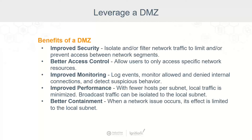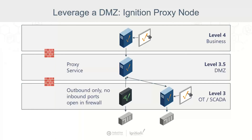Let me show you a couple of examples relevant to Ignition. If we look at the Purdue model, you have level three — the OT systems, typically where SCADA sits — and level four, which is the business network. A lot of people want to get access to the application on the business side. Typically, Wi-Fi is only on the business network, not on the operational network. So it's easy to deploy a DMZ — that's level 3.5 here.